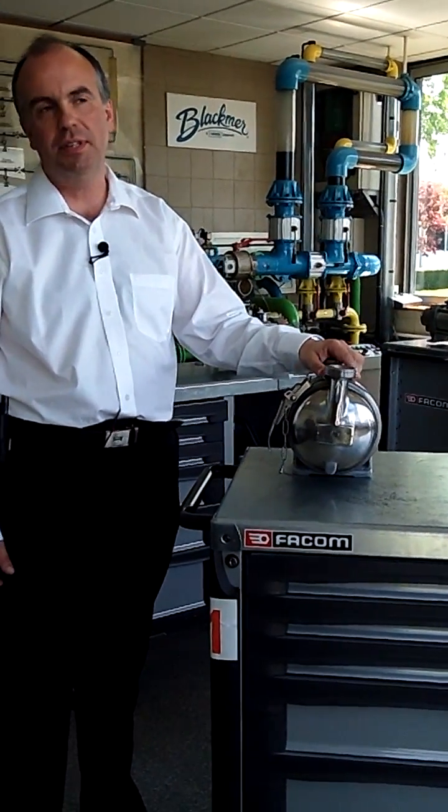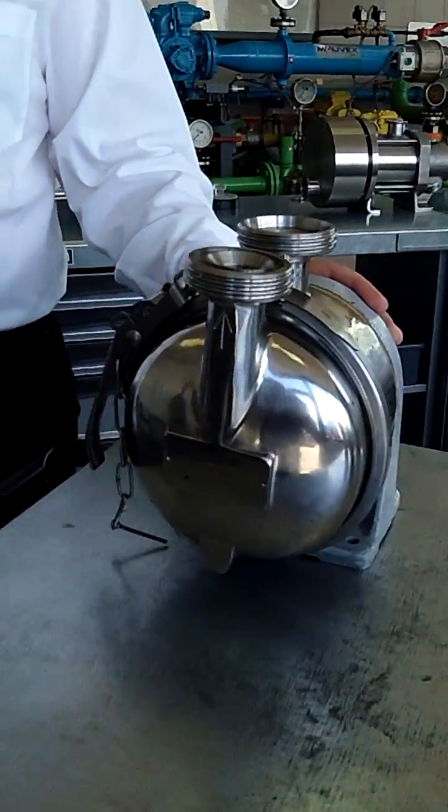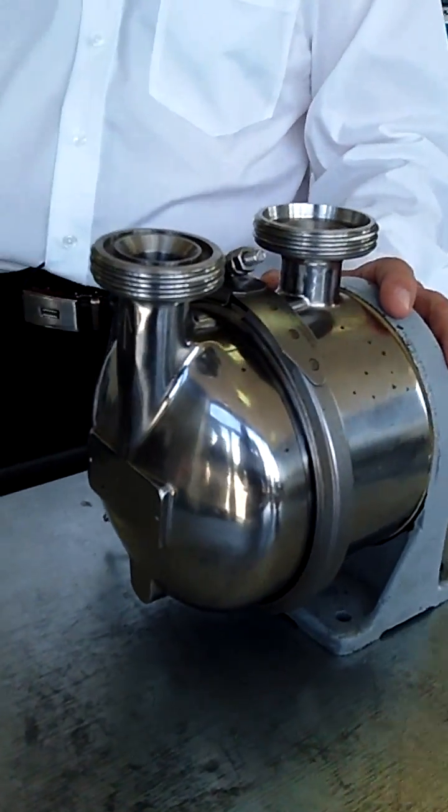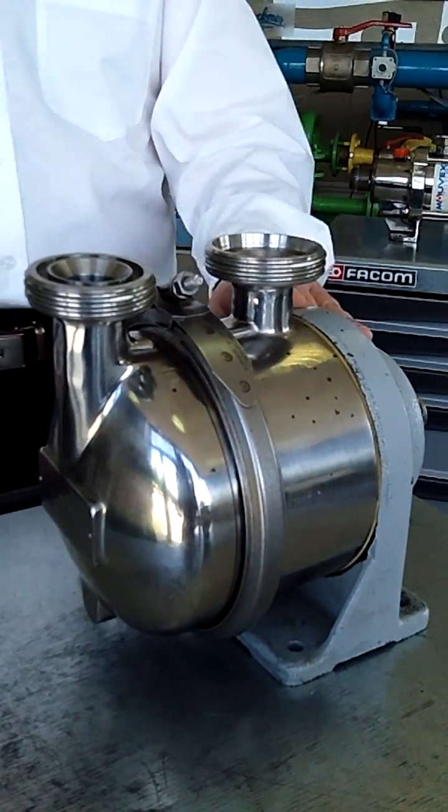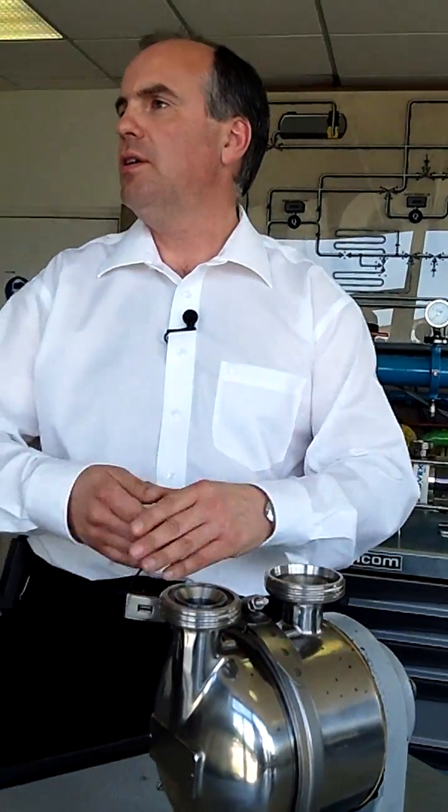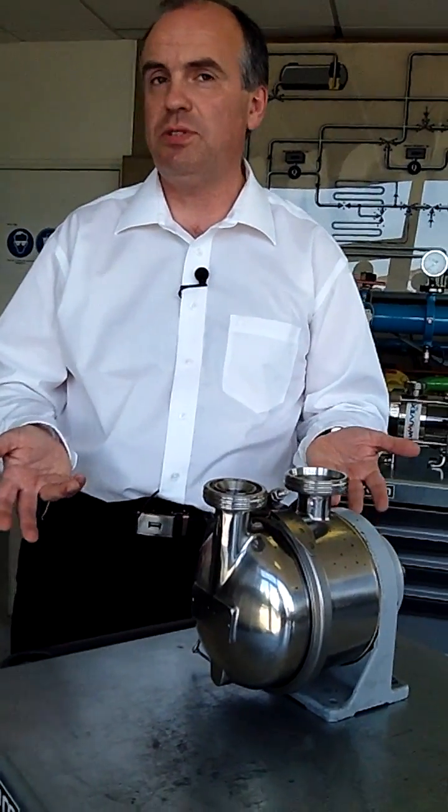This is the first seal-less eccentric disc pump. It is called the S-Series, launched in 1969, still in production today. One of the features of this pump is not only the eccentric disc, not only the seal-less design, it's also a pump which is extremely easy to take apart.